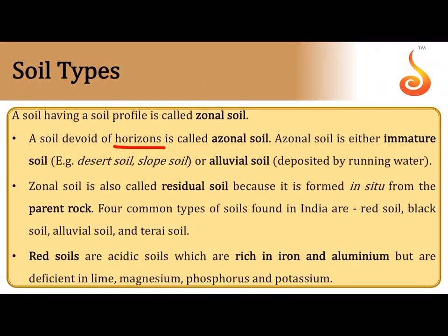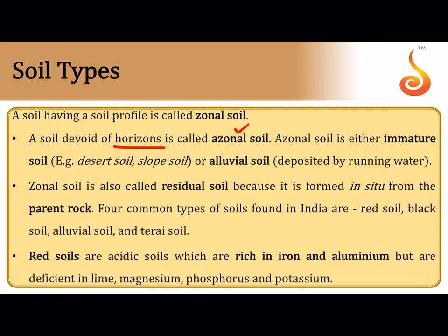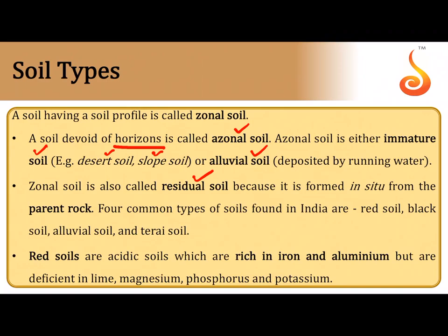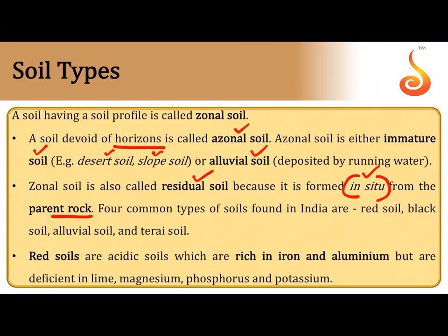Azonal soil does not have clear-cut horizons when sectioned — it is considered immature soil, like desert soil, slope soil, or alluvial soil deposited by rivers or floods. Zonal or residual soil shows clearly distinct horizons when sectioned — it develops at that very site (in situ) from the parent rock through leaching and weathering, the process referred to as pedogenesis.